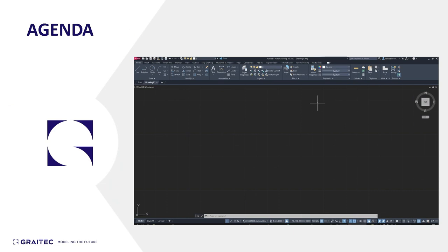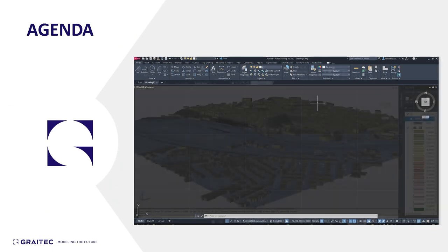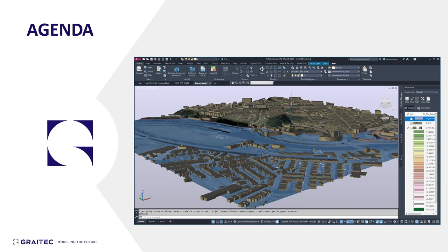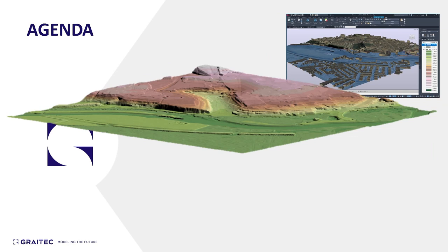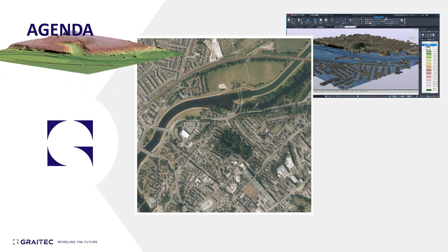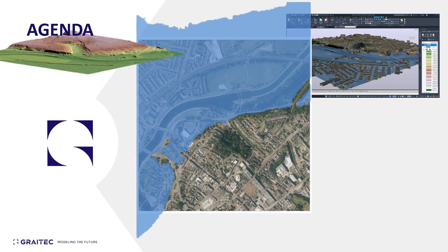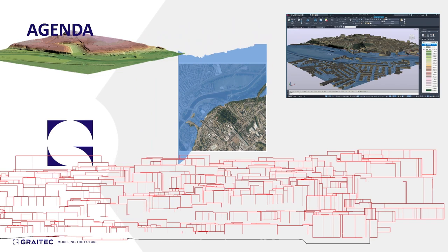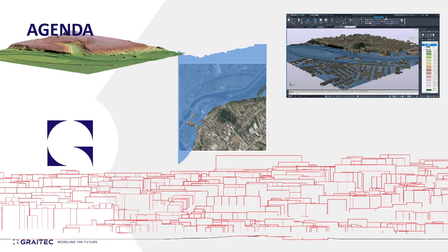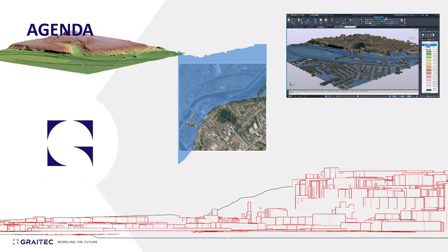We're going to start from a completely empty drawing and finish up with this. To get here we need to get some land form data and place our buildings at the correct elevation on it. We'll get some aerial imagery and drape that onto the surface so it looks more realistic. We'll also have a quick look at flooding to find out which buildings flood, and then we need the buildings themselves. I'm going to be using MasterMap topographic data and some height data.